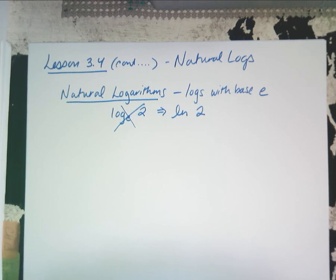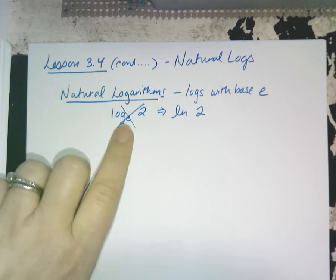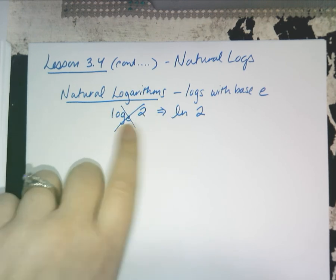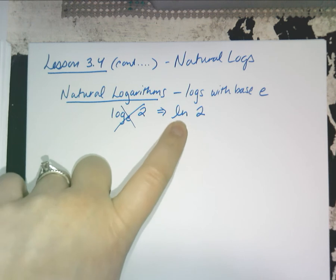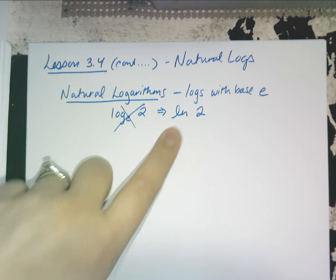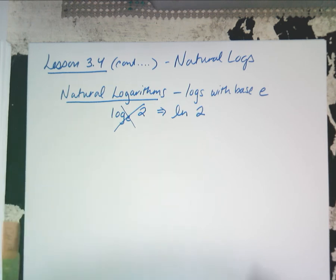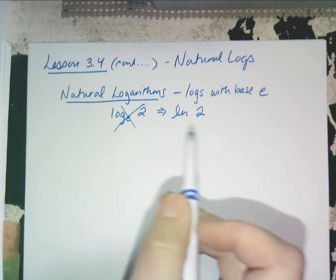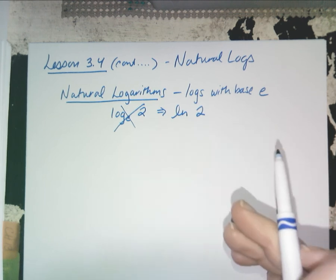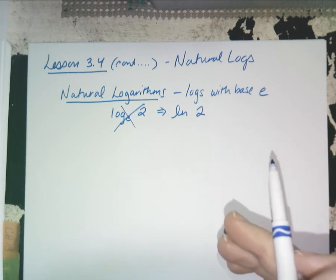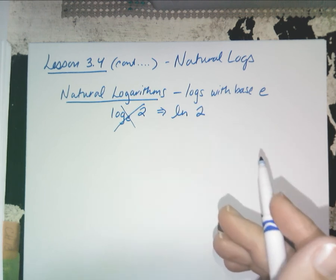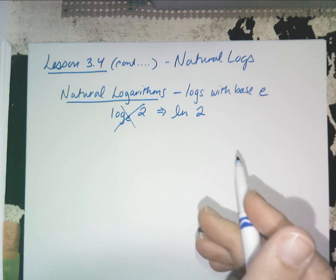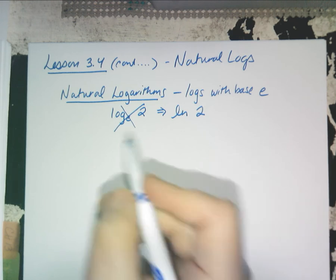So today we're covering natural logs. We learned common logs, which were base 10, and logs of base e are what we call the natural log, ln. This is really your best friend — you shouldn't have to use log base 10 anymore. You do ln for everything, because ln gets rid of everything including e's. That's why we choose to use it more often.